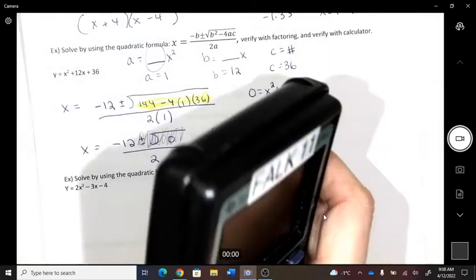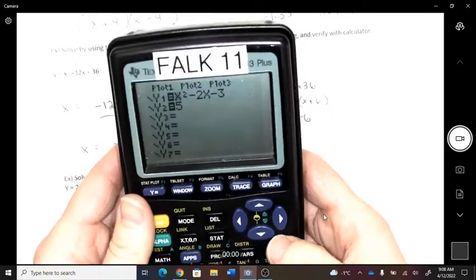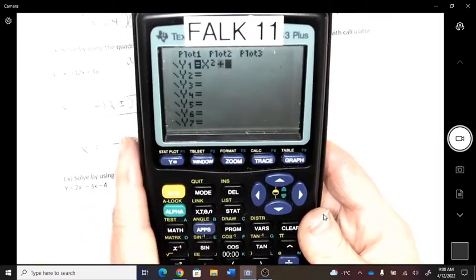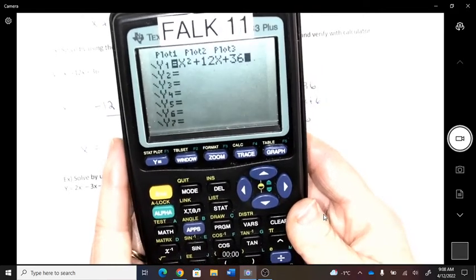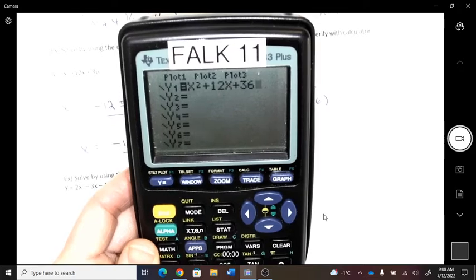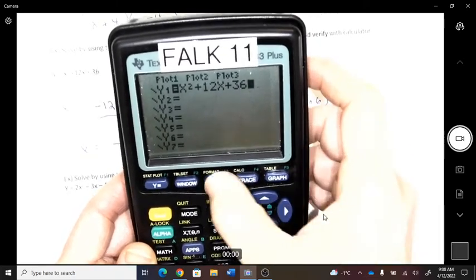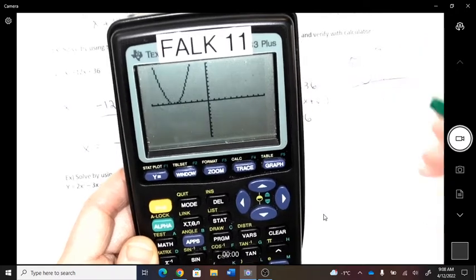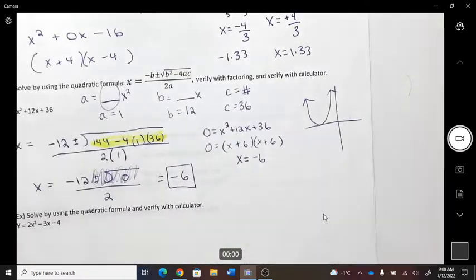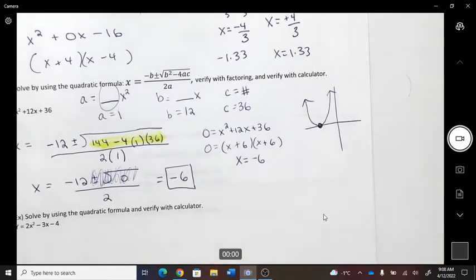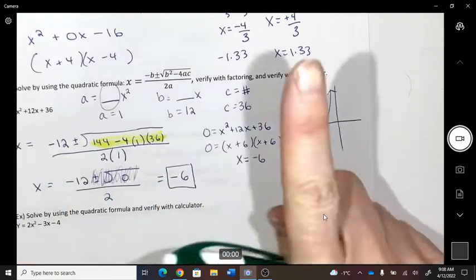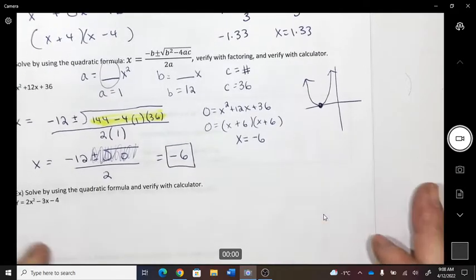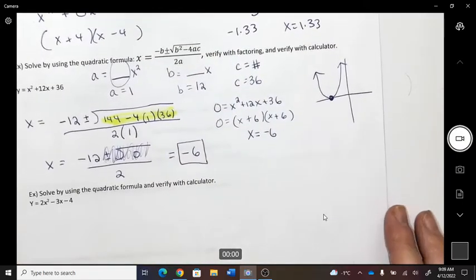Okay, verify with your calculator as well. So y equals x squared plus 12x plus 36. I'm going to graph it. And what do I know? Looks like this. That's what my calculator was showing me. And how many times does it cross the x-axis? Just once.